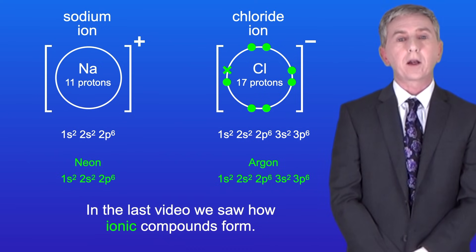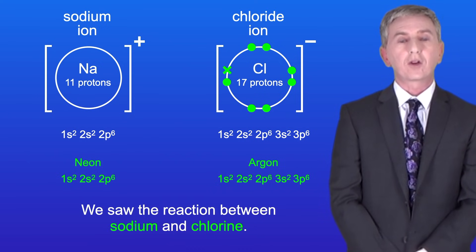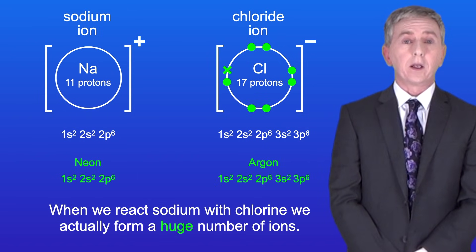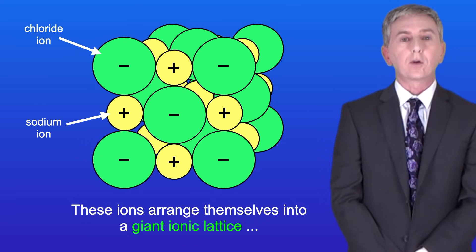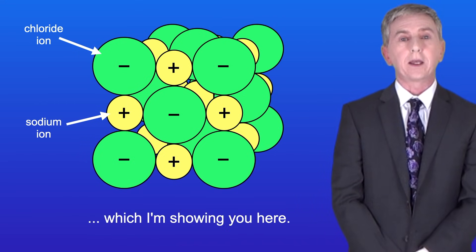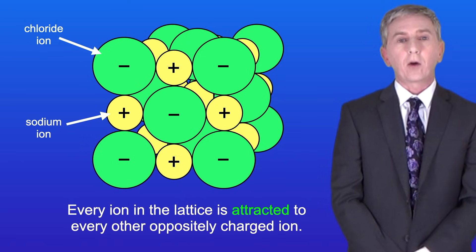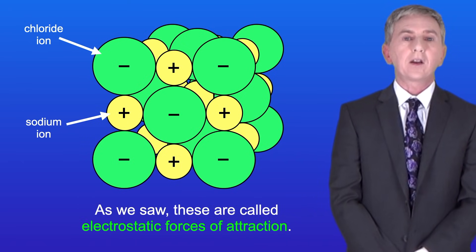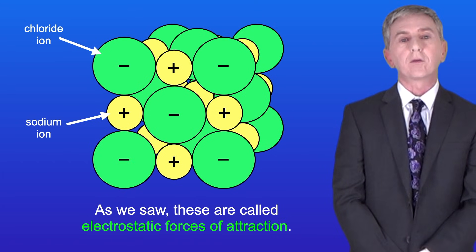In the last video we saw how ionic compounds form and we saw the reaction between sodium and chlorine. When we react sodium with chlorine we actually form a huge number of ions and these ions arrange themselves into a giant ionic lattice. Every ion in the lattice is attracted to every other oppositely charged ion and these are called electrostatic forces of attraction.